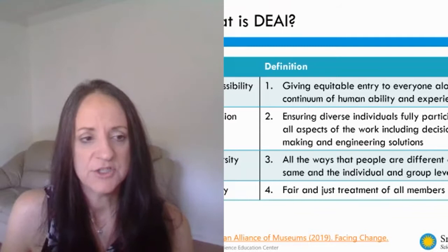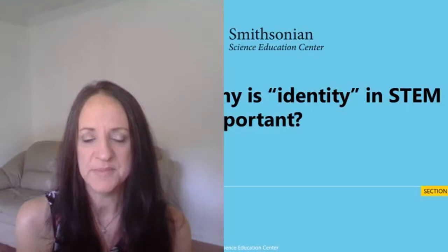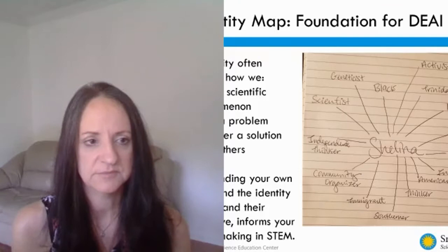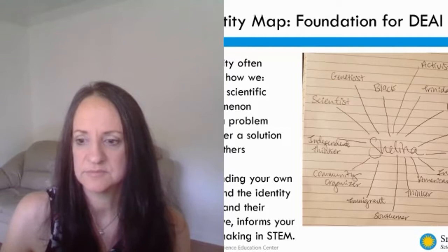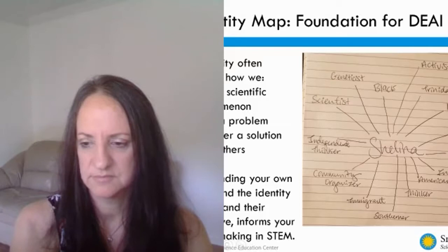On the next slide, Carol turns it over to colleague Shalina to talk about why identity in STEM is important. When thinking about identity, Shalina thinks about specific identity markers — characteristics that shape your background, your perception of life, and the lens through which you've been led.